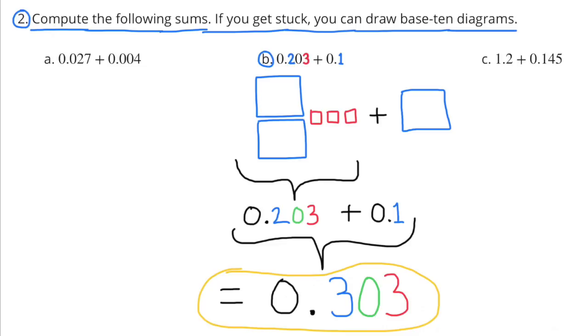Part B: 0.203 plus 0.1. The blue shapes represent a tenth and the red shapes represent thousandths. 203 thousandths plus 1 tenth equals 303 thousandths.